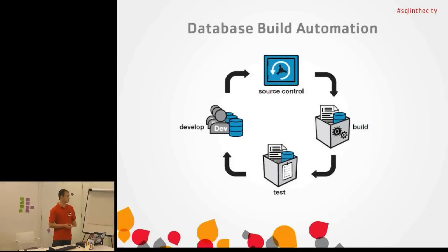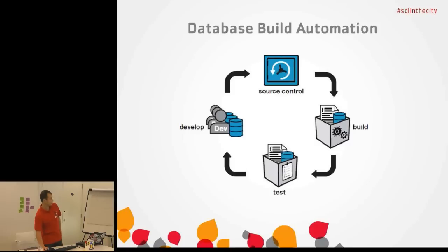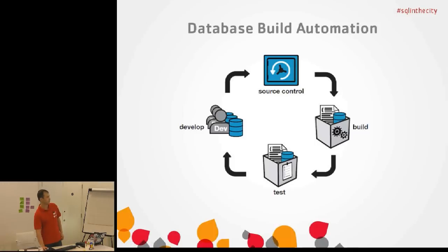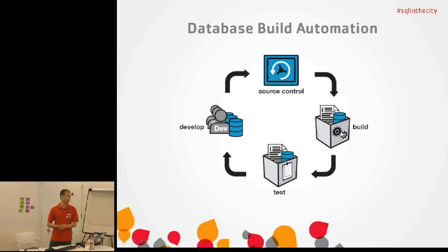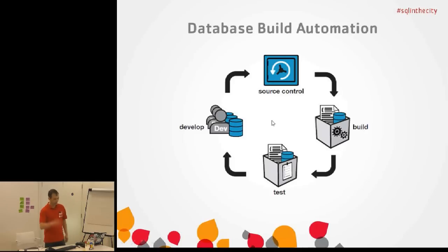This diagram shows how continuous integration works from the database's perspective. We have a bunch of developers using their own individual databases where possible — you might prefer a shared database, that's fine too. When changes are made, they go into source control. Build systems are often configured to detect that something has been added to source control and will trigger a build. As part of that process, you're often doing some testing as well, and any feedback goes back to the development team.